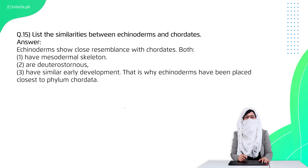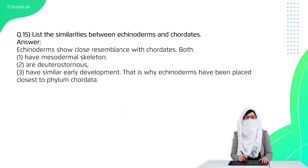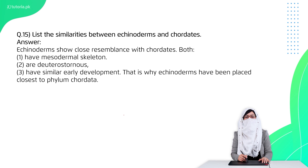Question 15 is: list the similarities between echinoderms and chordates. Echinoderms and chordates are closely related. They share deuterostome development in early embryological stages and share many characters with chordates, which is why echinoderms are kept close to chordates.